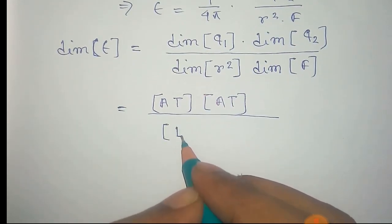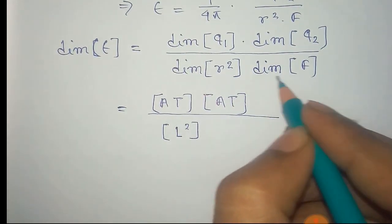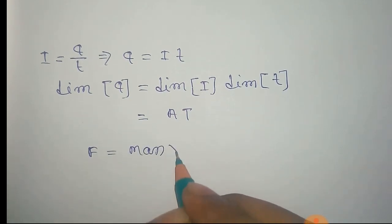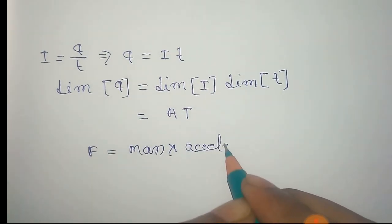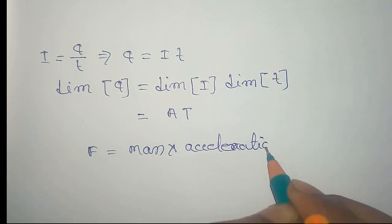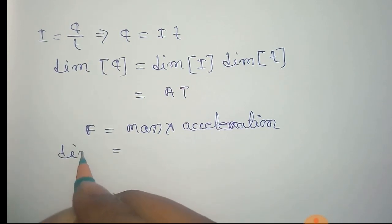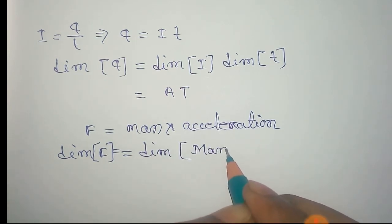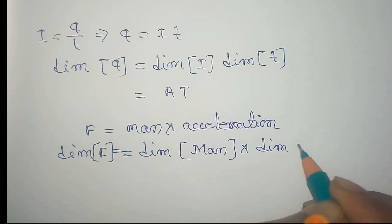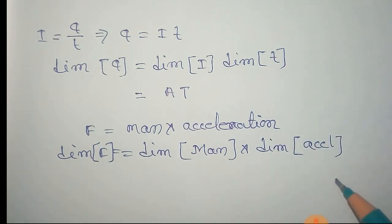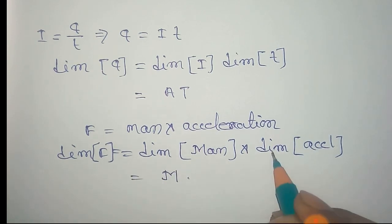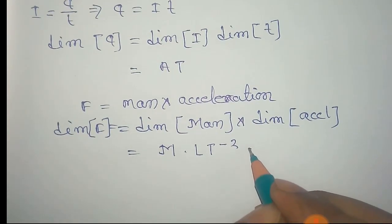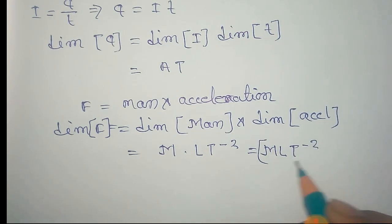Now the dimension of r square, that is length square, is obviously L square. We have to find the dimension of force. We know that force is generally equal to mass into acceleration. The dimension of force equals dimension of mass into dimension of acceleration. The dimension of mass is given by capital M and dimension of acceleration is given by LT minus 2, so the dimension of force is MLT minus 2.